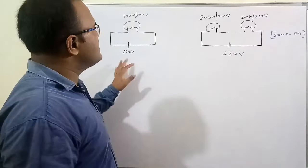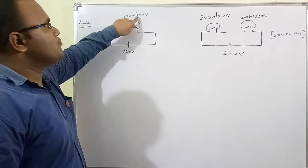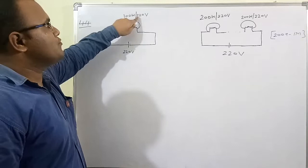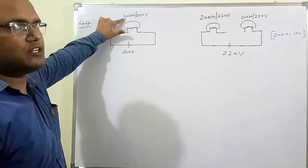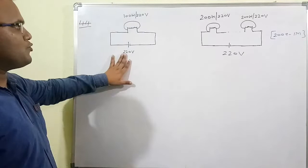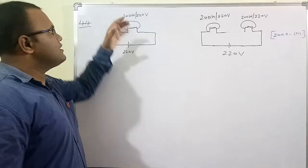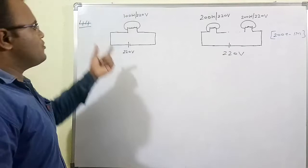Now we move to problem 44. In this problem there is one lamp with a rating of 100 watt for 220 volt. If we supply 220 volt, the bulb will dissipate 100 watt. If we supply less than 220 volt, the bulb dissipates less than 100 watt. If we exceed more than 220 volt, the bulb may get damaged.